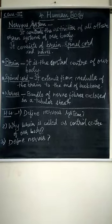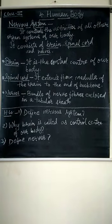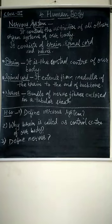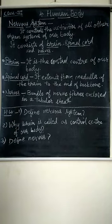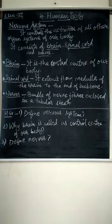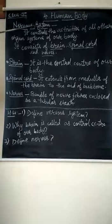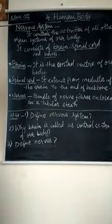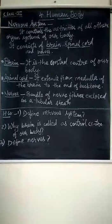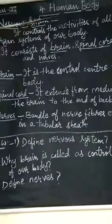There are two types of coordination in our body: nervous coordination and chemical coordination. Nervous coordination is brought about by nervous system. Nervous system controls the activities of all other organ systems of our body.